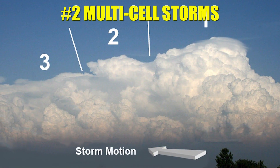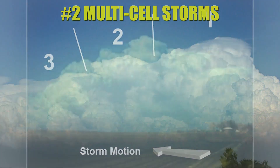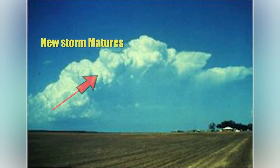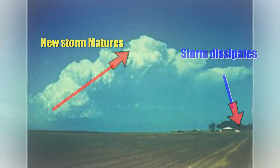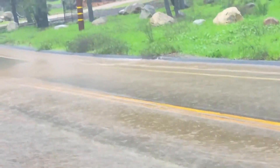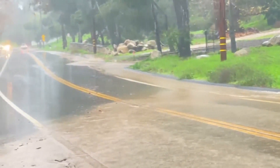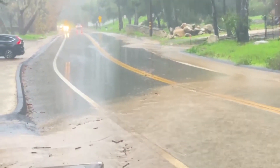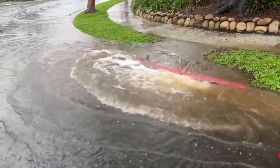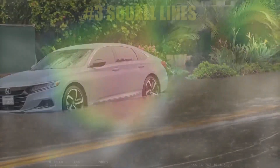One cell is carried along by the upper-level winds, with a second cell forming to take its place. This can create training thunderstorms over the same area, which can produce tremendous amounts of rain and flash flooding in some scenarios.